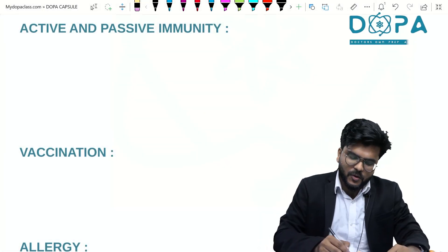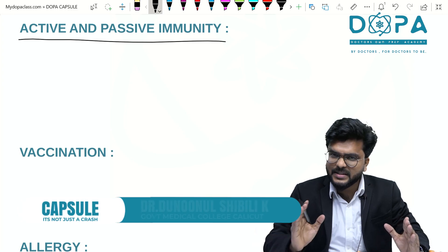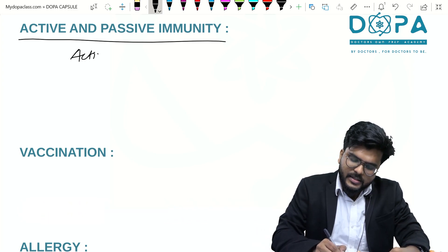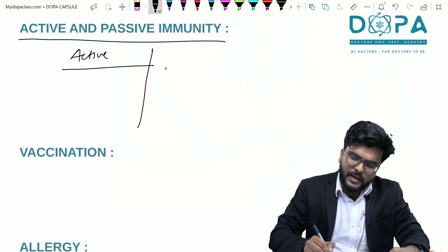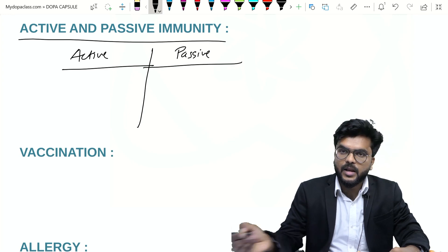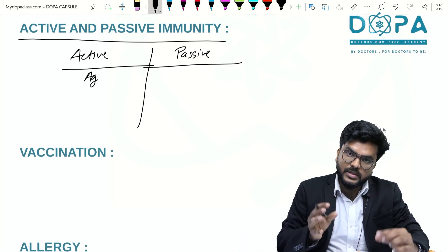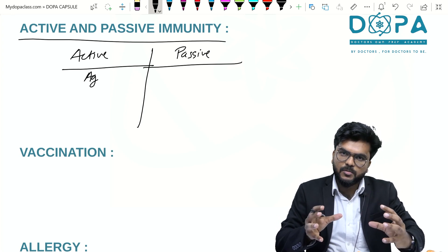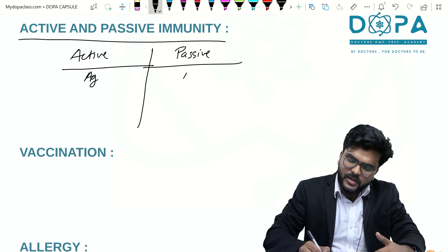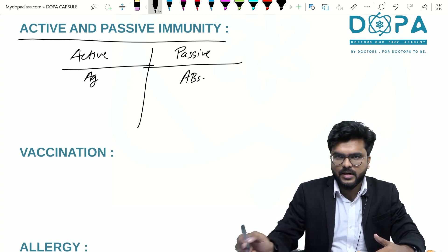Welcome students, welcome back to DOPA Crash Classes. Today we discuss the basic difference between active and passive immunity. Active immunity is a kind of immunity which is imparted into the host body by means of certain antigens, and passive immunity is imparted to the host body by means of certain antibodies. That is the basic difference.